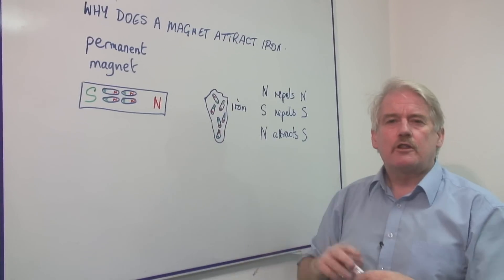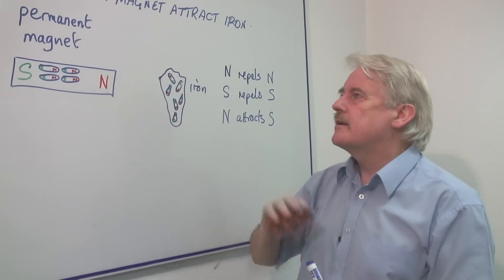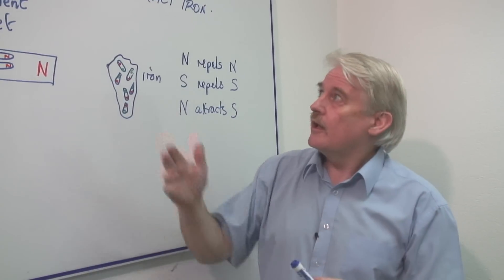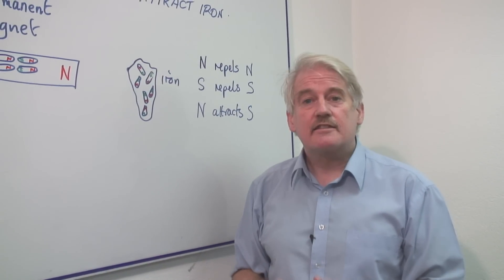This depends very much on the material and the way we make the magnet. So this is basically why a magnet attracts iron.